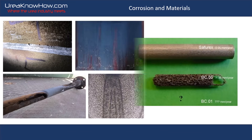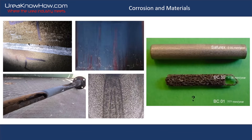Corrosion is one of the main challenges in urea production. In this program, we will delve into the theory of corrosion in carbamate solutions and explore modern materials like SAFIREX, UREMIUM-29, DP-28-W, titanium and zirconium, which help minimize risks.